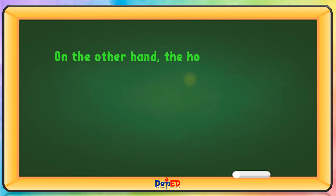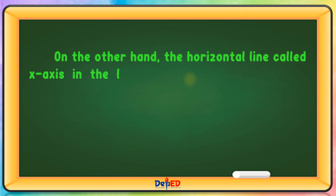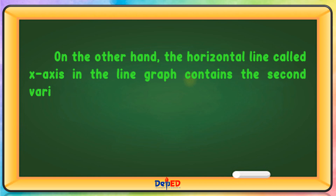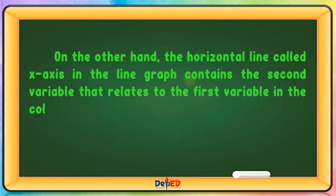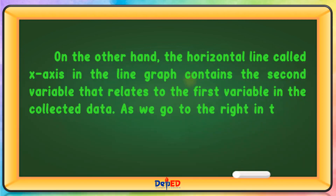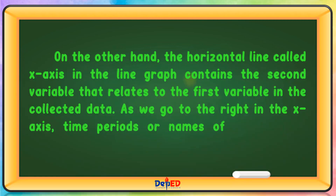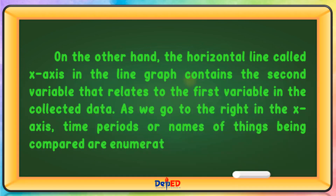On the other hand, the horizontal line called x-axis in the line graph contains the second variable that relates to the first variable in the collected data. As we go to the right in the x-axis, time periods or names of things being compared are enumerated.